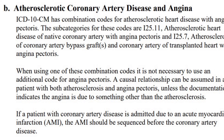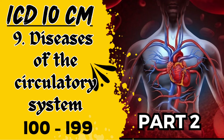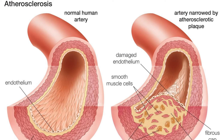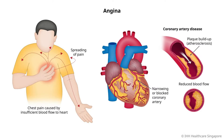Under chapter 9, section B covers atherosclerotic coronary artery disease and angina. Angina is a type of chest pain caused by reduced blood flow to the heart due to blockages or clot formations. Atherosclerotic coronary artery disease is caused by plaque buildup in the walls of the arteries that supply blood to the heart — cholesterol deposits building up in the arteries. When this plaque causes reduced blood flow resulting in chest pain, it is called angina.